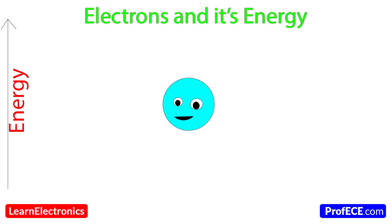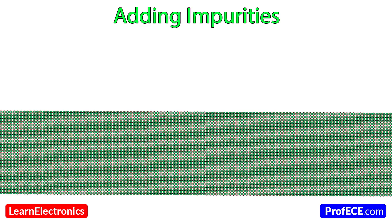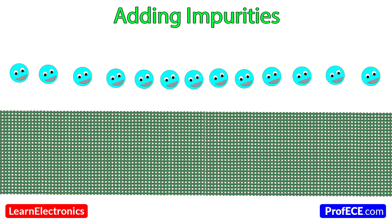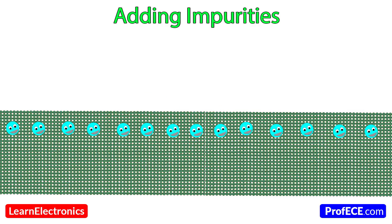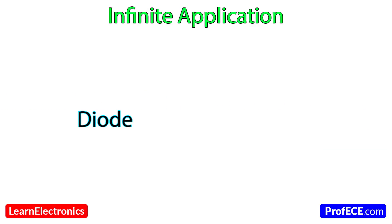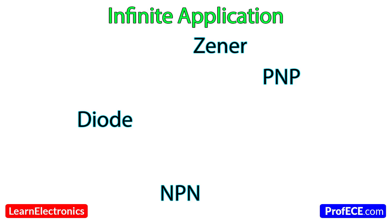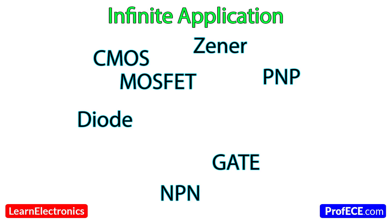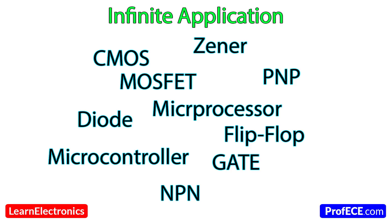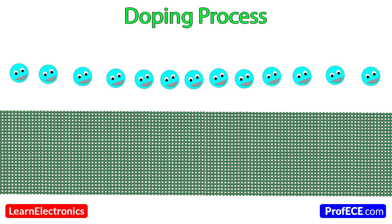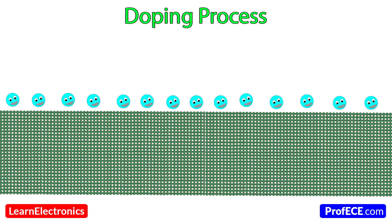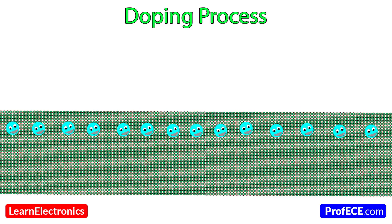To accomplish a higher number of electrons, adding impurities or atoms into the Intrinsic Semiconductor yielded astonishing results, laying the path to uncountable applications and conduction scenarios. The process of pouring or adding impurities to a pure semiconductor is called doping.